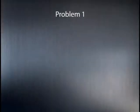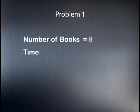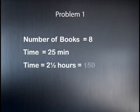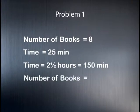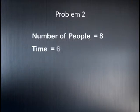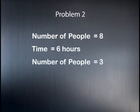It seems as if you understand everything perfectly. Now I'm going to give you some examples on direct and indirect proportion to work out. The first problem: if a machine prints 8 books in 25 minutes, how many books will be printed in 2 and a half hours? The second problem: 8 people can dig a trench in 6 hours — how long will it take 3 people if they work at the same rate?